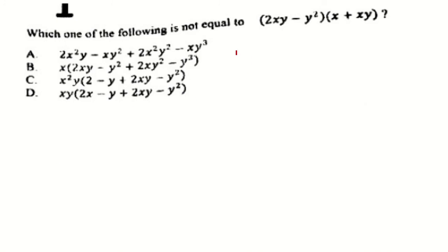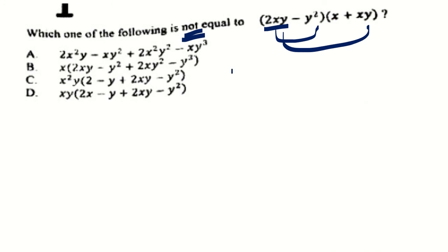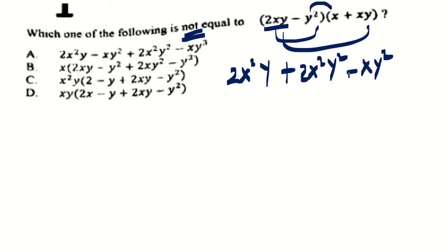The next question says: which one of the following is NOT equal to the given expression? Remember, it says 'is not.' We need to multiply first. 2xy will multiply each term: 2xy times x will be 2x²y, because x times x is x² and y remains. And 2xy times xy will be 2x²y². Then negative y² will multiply each term: negative y² times x will be negative xy², and negative y² times xy will be negative xy³.